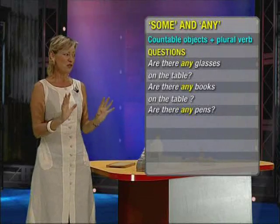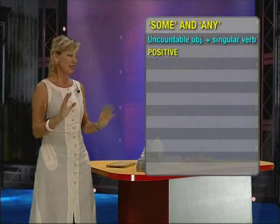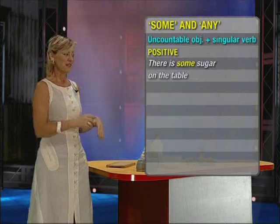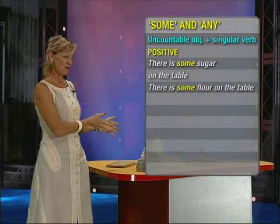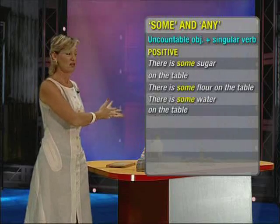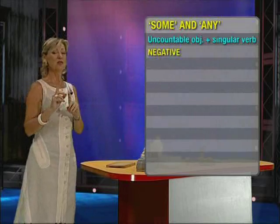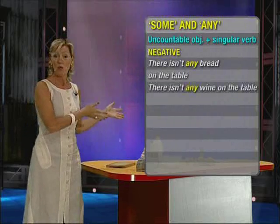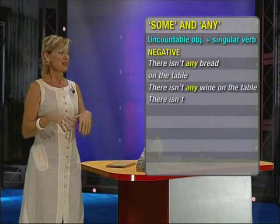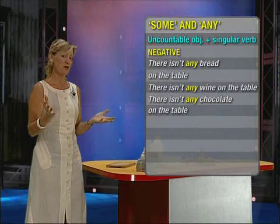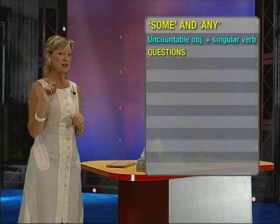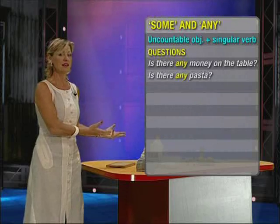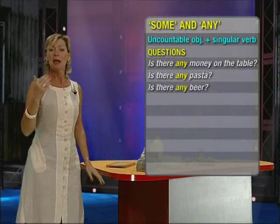Now let's move on to uncountable objects. Positive: 'there is some sugar on the table', 'there is some flour on the table', 'there is some water on the table'. Negative, again using 'any': 'there isn't any bread on the table', 'there isn't any wine on the table', 'there isn't any chocolate on the table'. Questions with singular verb and 'any': 'is there any money on the table?', 'is there any pasta?', 'is there any beer?'